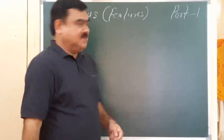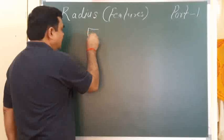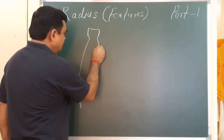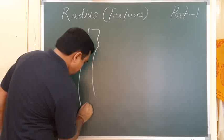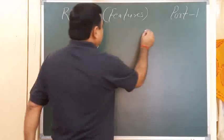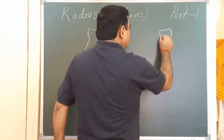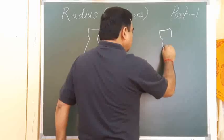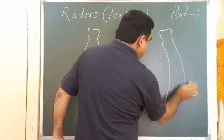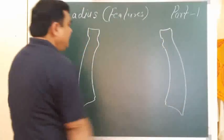Now let us discuss the anatomy of the radius. This is an anterior view of the radius, and this is a posterior view of the radius.